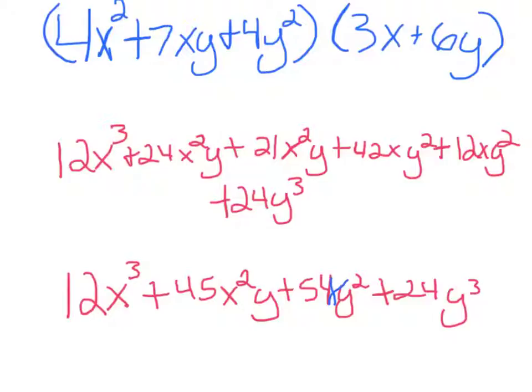Then you have to simplify, and you've got 12x to the third plus 45x to the second y plus 54xy to the second plus 24y to the third.